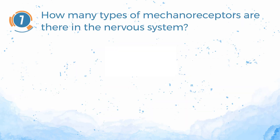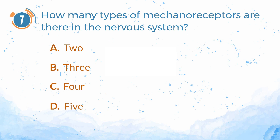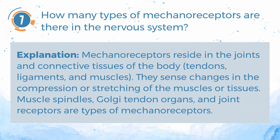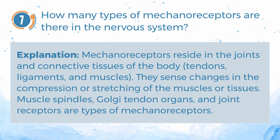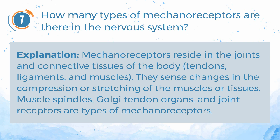Number 7. How many types of mechanoreceptors are there in the nervous system? A. 2. B. 3. C. 4. D. 5. The answer is B — 3. Mechanoreceptors reside in the joints and connective tissues, tendons, ligaments, and muscles. They sense changes in the compression or stretching of muscles or tissues. Muscle spindles, Golgi tendon organs, and joint receptors are types of mechanoreceptors. Muscle spindles sense alteration in the length of the muscle and the rate of alteration, and contract when stimulated to protect the muscle from overstretching. Golgi tendon organs sense alteration in muscle tension and relax when stimulated to protect the muscle from overstressing, operating at the junction of a muscle and a tendon. Joint receptors sense changes in speed in the joint and respond to overextension to provide protection.